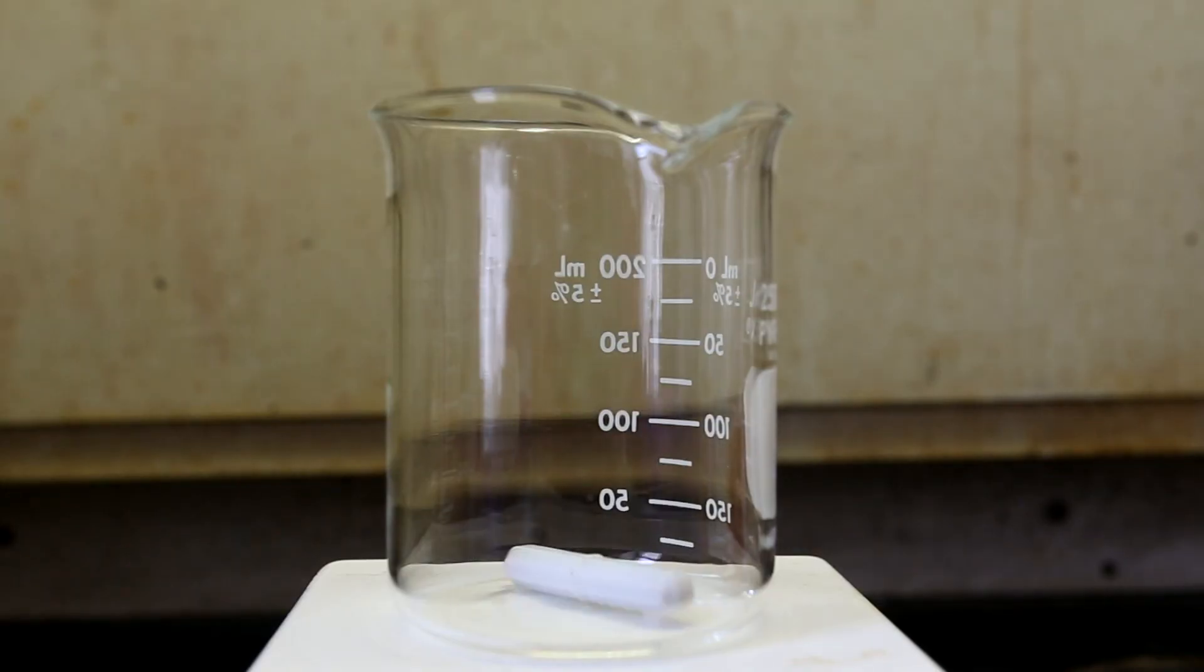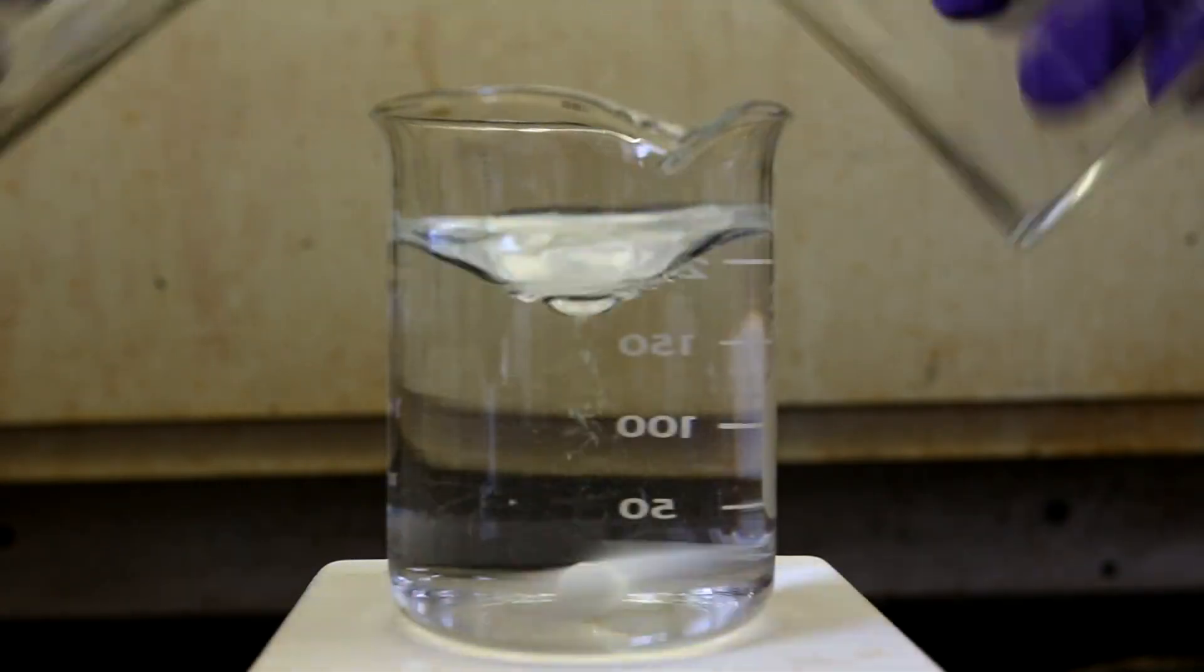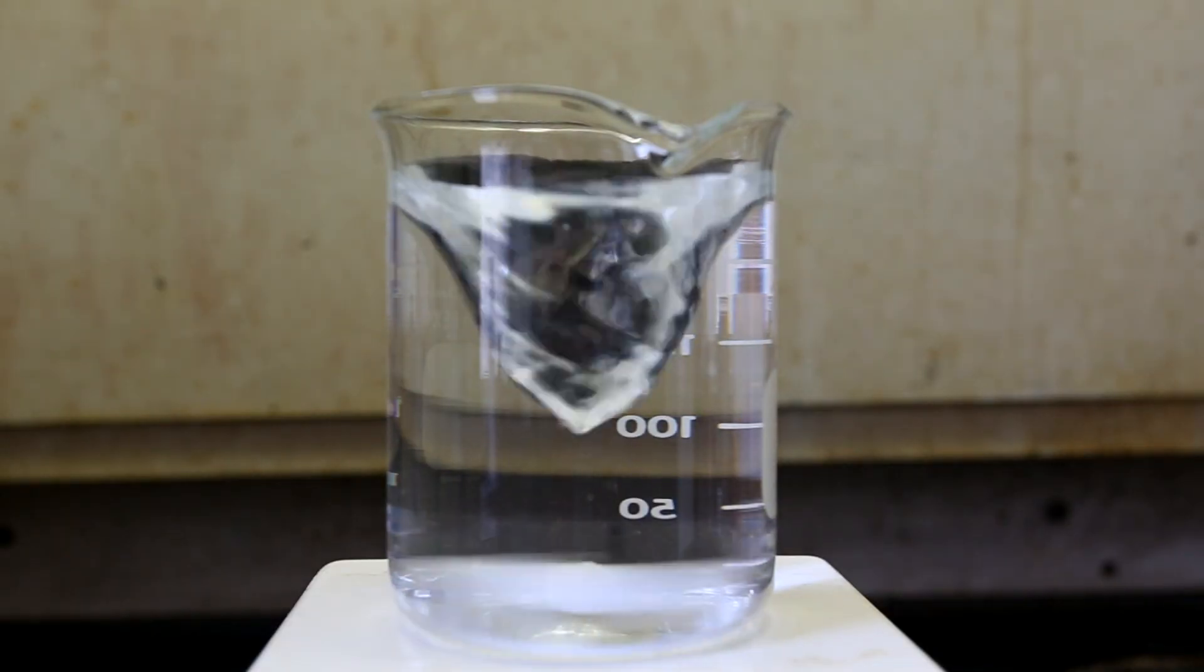Now to test it, mix equal volumes of Solution A and Solution B, and mix them together thoroughly. It's called a clock reaction because it takes a very predictable amount of time for the color change to occur.